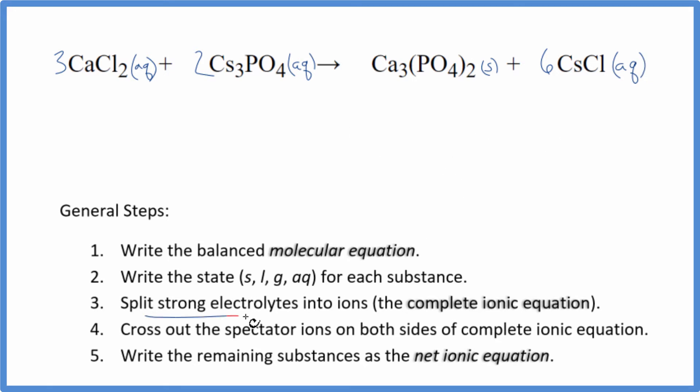Now we can split the strong electrolytes into their ions for the complete ionic equation. Calcium group two would be two plus. The chloride ion is one minus. Three calcium ions. I won't write the states right now. Let's write that at the end. Plus three times two, six of the chloride ions, Cl minus.